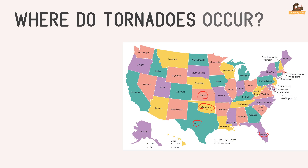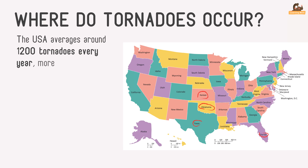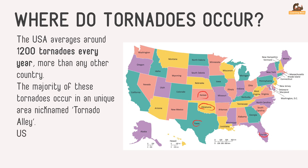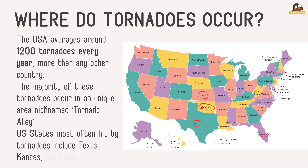Where do tornadoes occur? The USA averages around 1,200 tornadoes every year, more than any other country. The majority of these tornadoes occur in a unique area nicknamed Tornado Alley. US states most often hit by tornadoes include Texas, Kansas, Oklahoma and Florida.